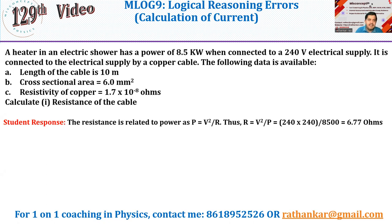Okay, so the problem reads like this: a heater in an electric shower has a power of 8.5 kW when connected to a 240 V electrical supply. It is connected to the electrical supply by a copper cable. The following data is available: length of the cable is 10 m, cross sectional area is 6.0 mm², resistivity of copper is 1.7 × 10⁻⁸ ohms. Calculate the resistance of the cable.